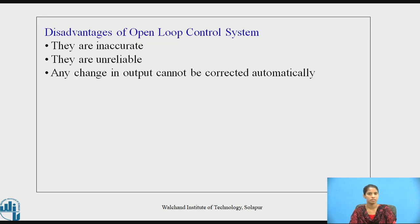The disadvantages of open-loop control systems: they are inaccurate because there is no measurement device which compares the input and the output. They are unreliable, and any change in the output cannot be corrected automatically.